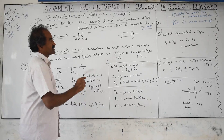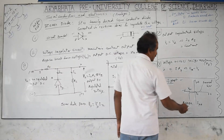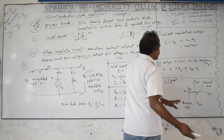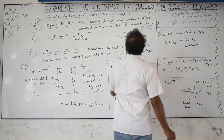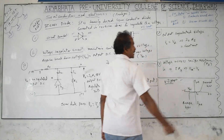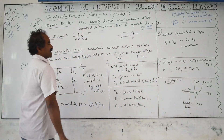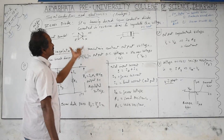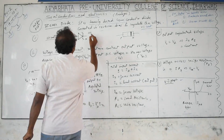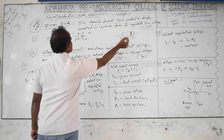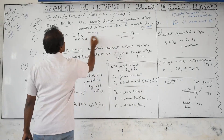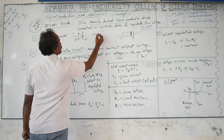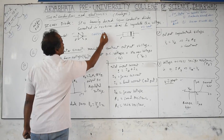In Zener breakdown, we do not rely on increasing temperature to break bonds. Instead, a small electric field provides a constant voltage, and the reverse current can increase to high values while the voltage across the diode remains constant — that voltage is called the Zener voltage Vz. For example, if you want to keep the output voltage constant at 10 volts, Vz = 10 volts.